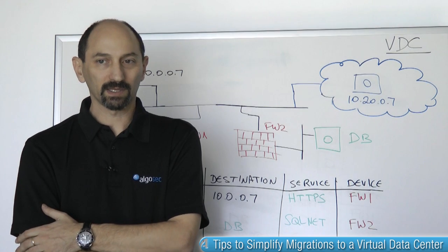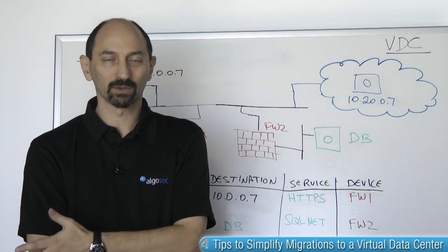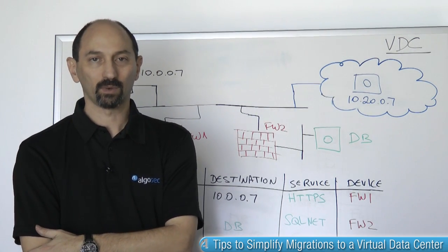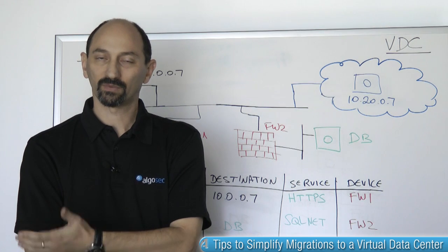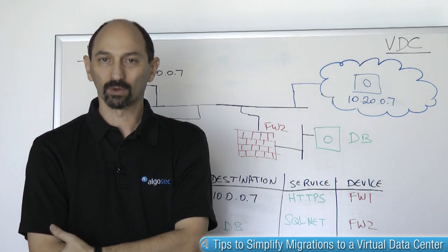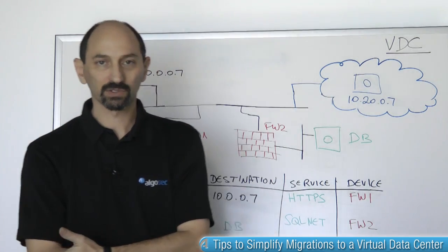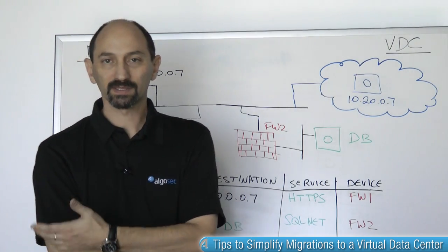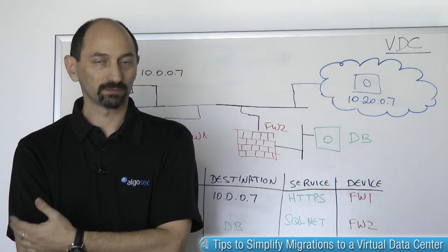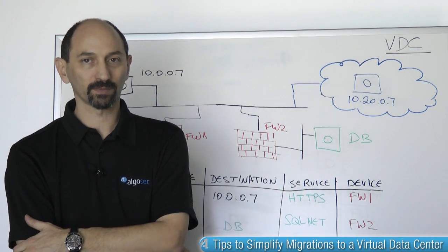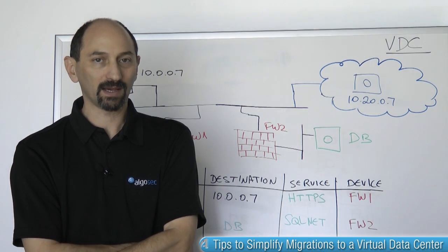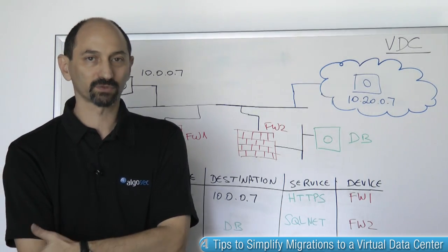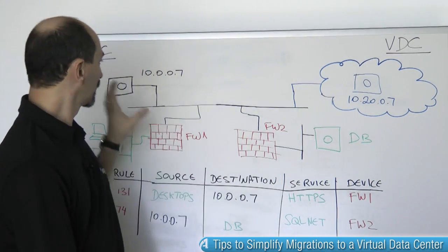So how would we make sure that all the necessary traffic is really allowed to go where it needs to go to the new clone? We can use the firewall rules themselves as a form of documentation. After all, any application that relied on the old physical server is working just fine, which means all the traffic it needs — either reaching or emanating from the old server — is already allowed by the firewall policies.